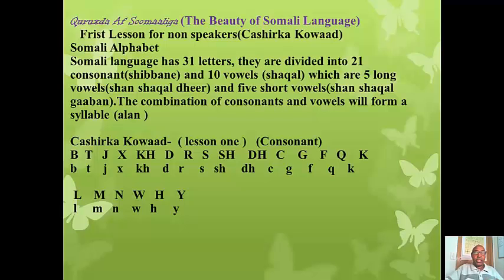The Somali language has 31 letters. They are divided so that 21 of these 31 are called consonants, and 10 are vowels, which in Somali we can say 'shackle.' These 10 vowels can be divided into 5 long vowels and 5 short vowels. When you combine a consonant and a vowel, as in English, you will find what you call a syllable. This syllable in Somali we call 'aram.'